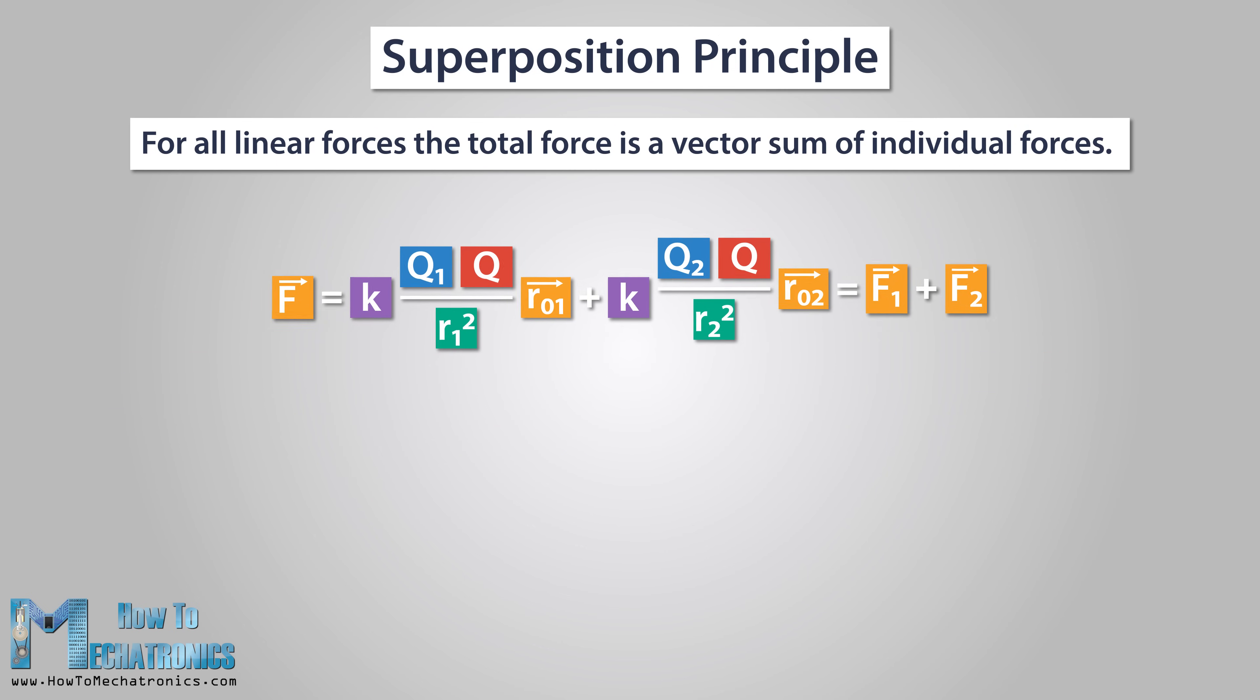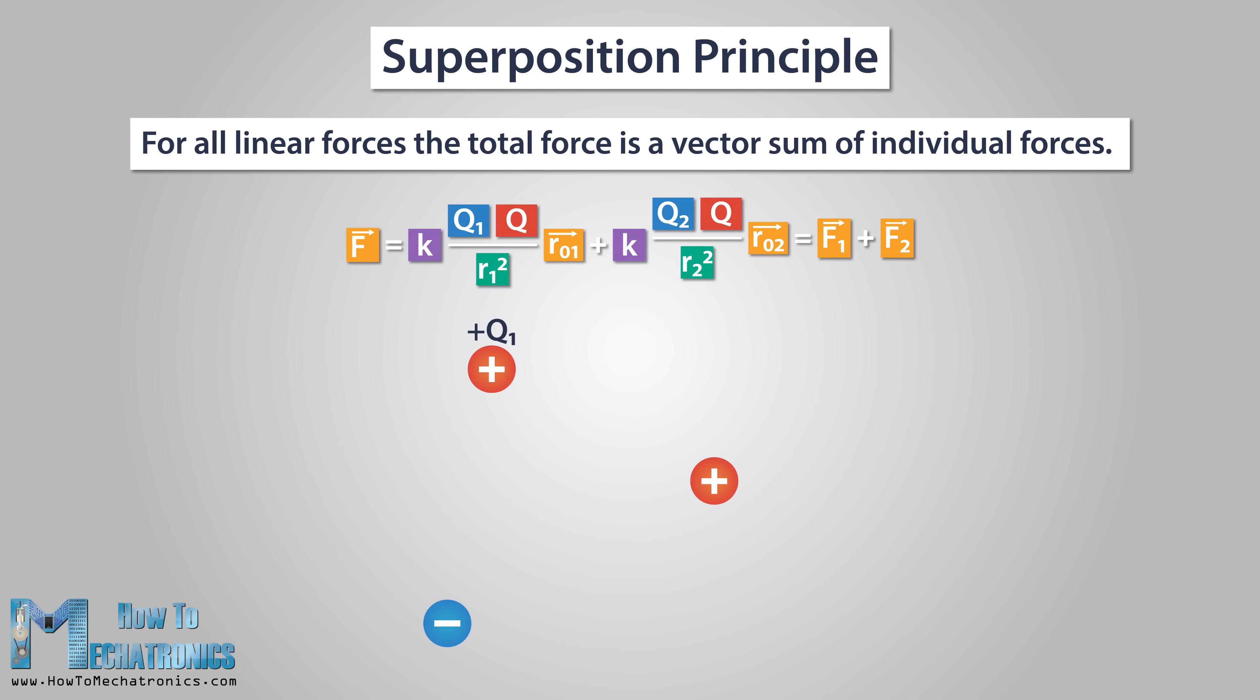Here's an example. We have three point charges Q1, Q2, and Q, and we need to find the force that Q1 and Q2 exert on Q. Q and Q1 are positive charges, and Q2 is a negative charge. The force that Q1 applies on Q, F1, is repulsive, and the force that Q2 applies on Q, F2, is attractive. The total electric force F is a sum of the two forces, F1 and F2, and is represented with this vector, F1 plus F2.